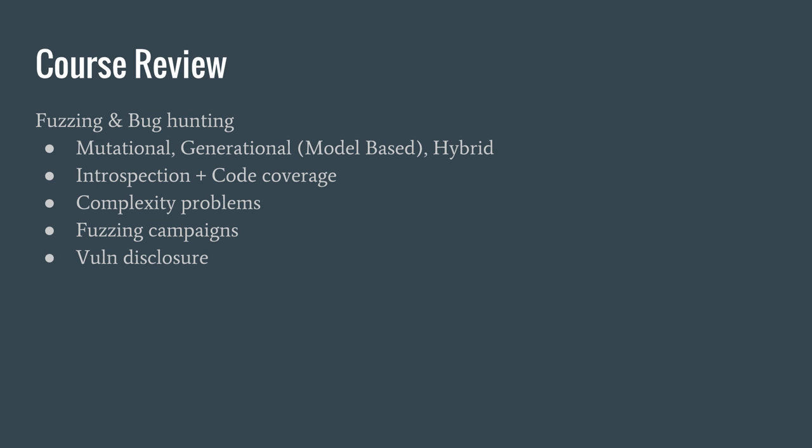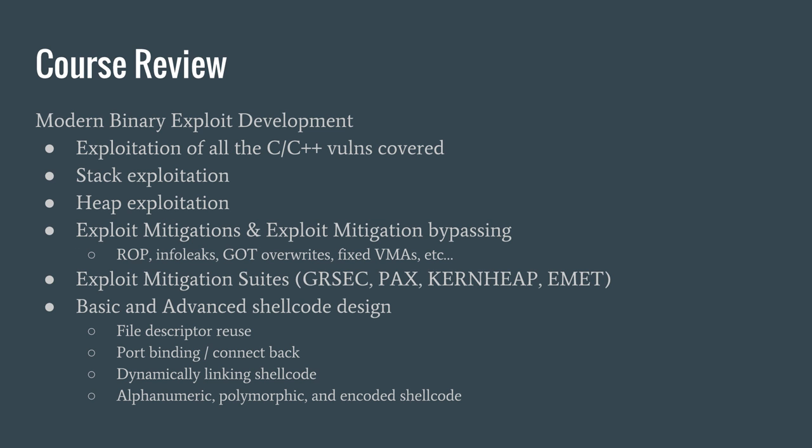We then moved on to cover fuzzing and bug hunting. We covered mutational, generational, and hybrid-based fuzzing. We discussed introspection and code coverage, the test case explosion problems and challenges, and complexity issues. We discussed fuzzing campaigns and also revisited vulnerability disclosure — essentially the way to go about it and what you need to know in order to prove a vulnerability. That was part of homework five, the VLC application fuzzing exercise.